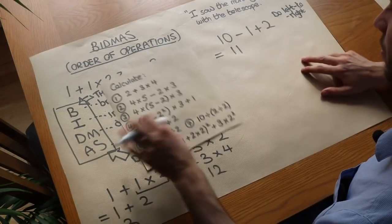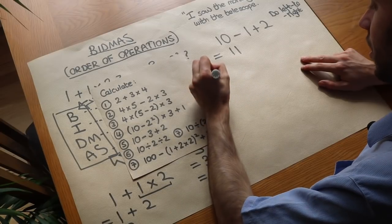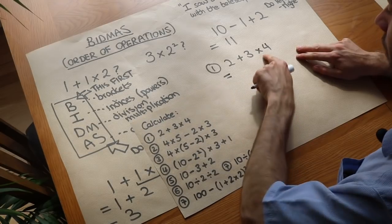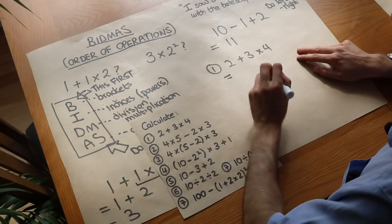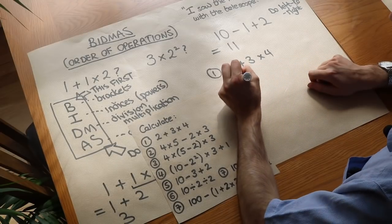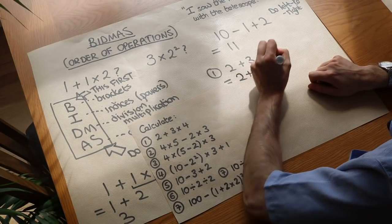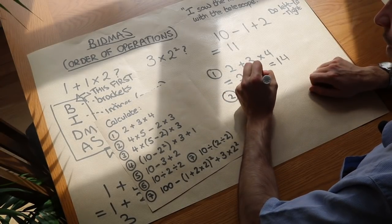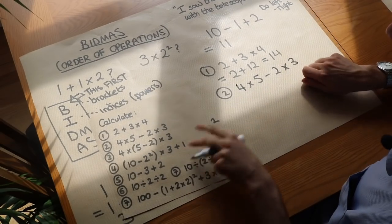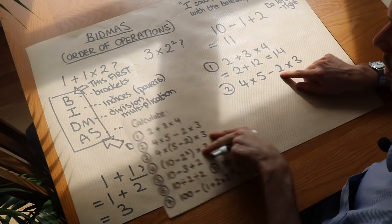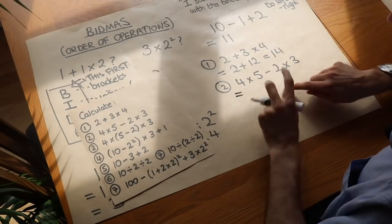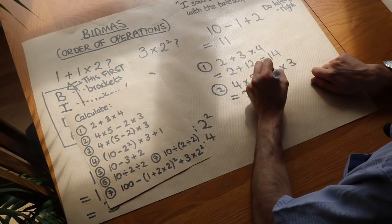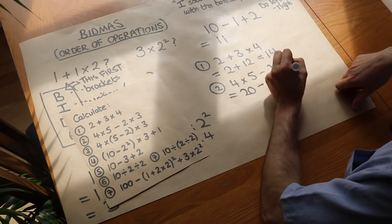Let's do these examples. First, 2 plus 3 times 4. In BIDMAS we do multiplication before addition, so we do 3 times 4 first, which is 12, then 2 plus 12, which is 14. Second, 4 times 5 minus 2 times 3. We do multiplications first before the subtraction: 4 times 5 is 20, and 2 times 3 is 6, giving us 20 minus 6, which is 14.